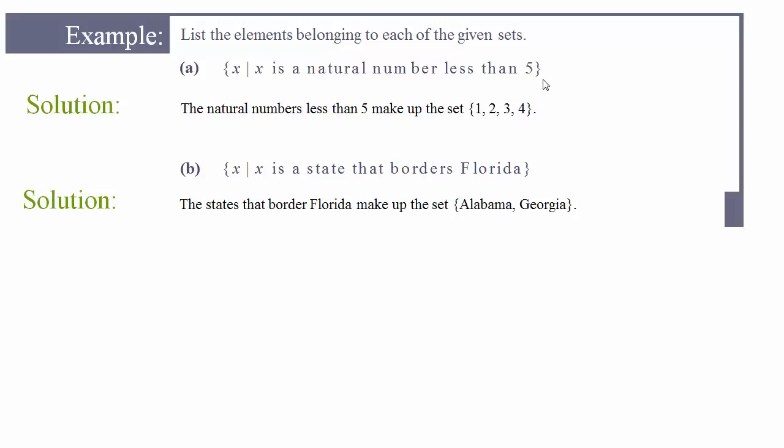Natural numbers are 1 and above integers only. 1, 2, 3, 4, 5, 6, 7. They are the counting numbers. If you were to count you would use whole numbers. The second one is the set of all x's such that x is a state that borders Florida. Of course if you know anything about geography you know that only Alabama and Georgia border Florida. So that would be your set.